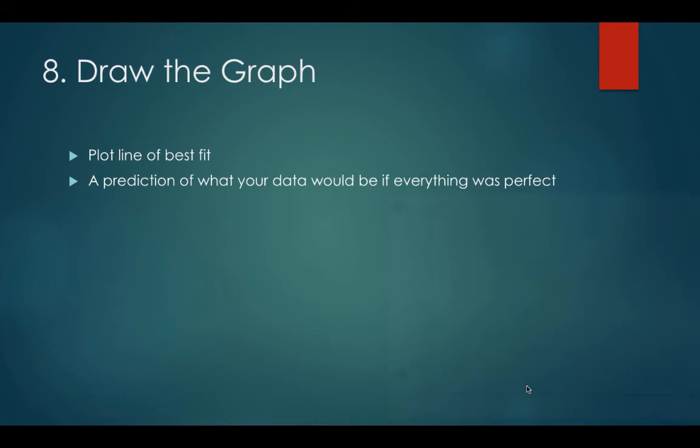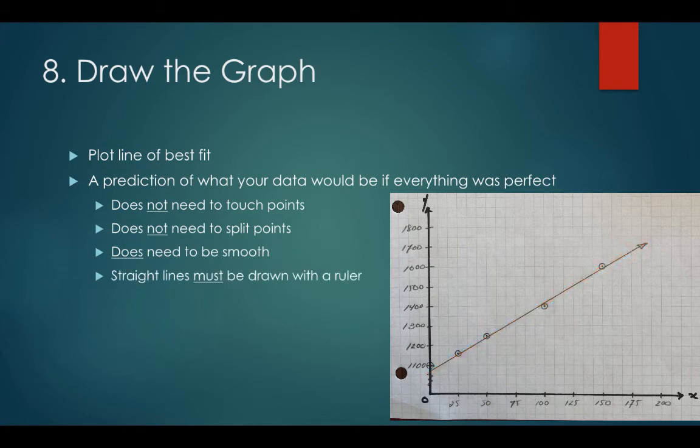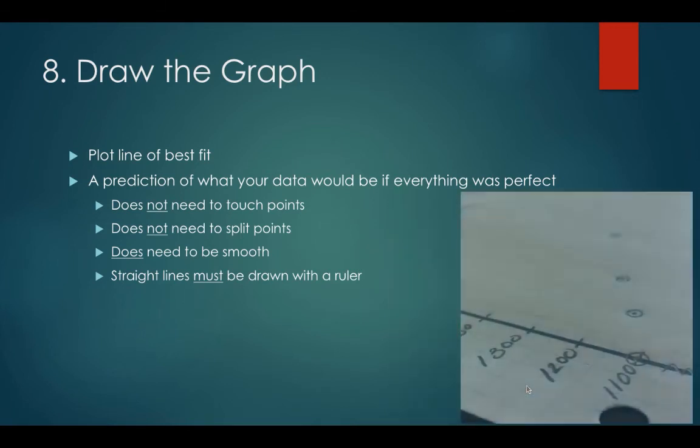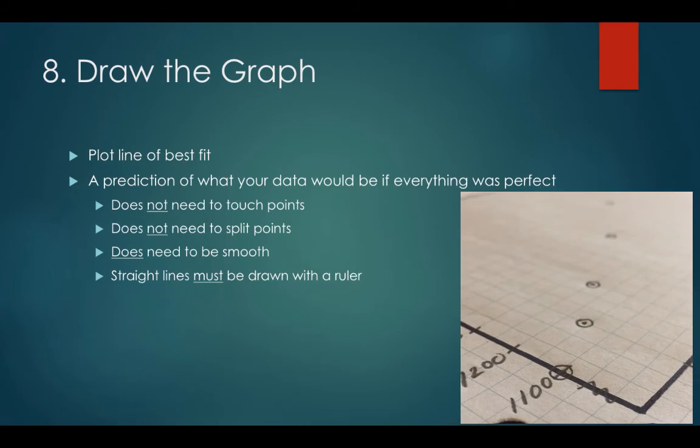It's going to be a smooth line. It does not need to touch the points, nor does it need to split the points. It does need to be smooth though. And if it is a straight line, you need to draw the line with a ruler. Now a hint here for drawing a line of best fit is to tilt your graph up on its edge and stare down the points to see if you can see where the line of best fit might be.